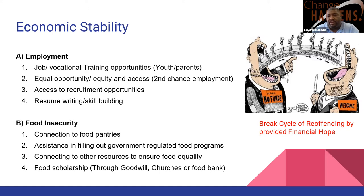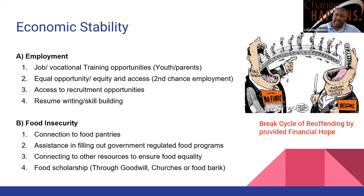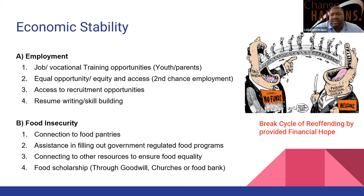Regarding access to recruitment opportunities: many vocational training programs have graduations. For example, Goodwill — one of our vocational partners — has a graduation where they certify participants as HVAC technicians or in other fields and bring employers to recruit them. Their retention rates are around 86% or higher for different industries. This gives the youth hope: once they come out, they have something to do and work toward. Resume writing and skill building help assess the youth's likes and dislikes and give them the opportunity to build a certain skill. It all gives them hope and a chance.